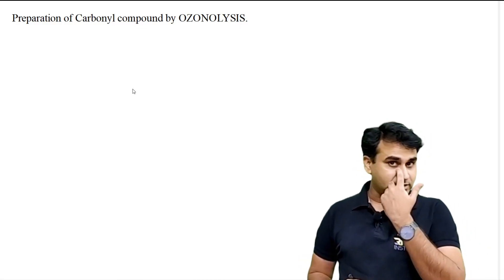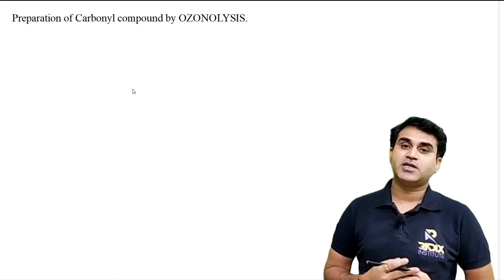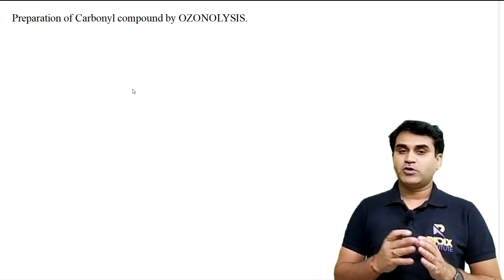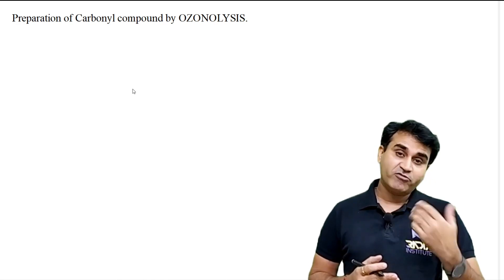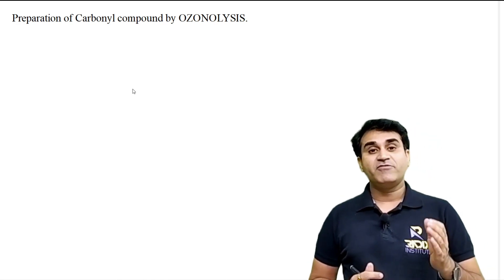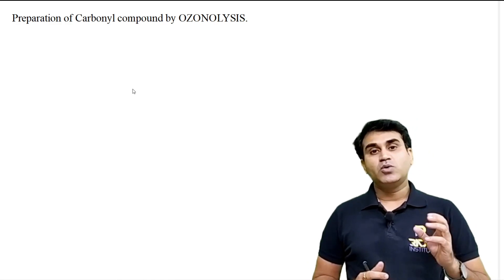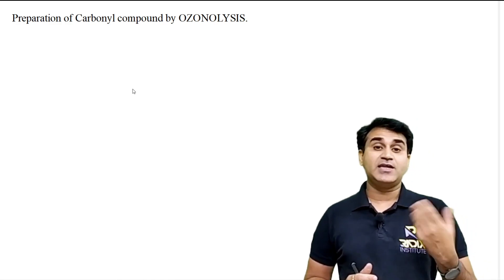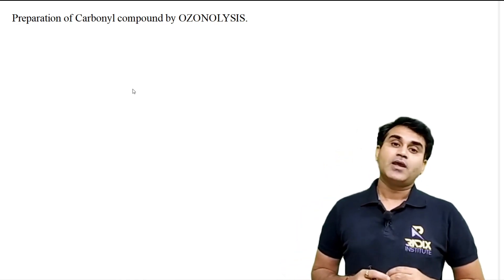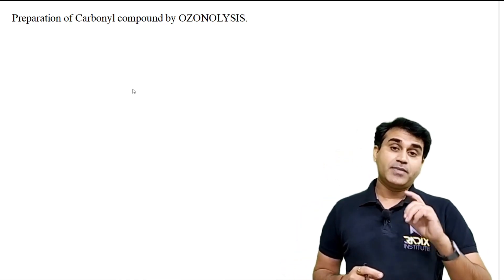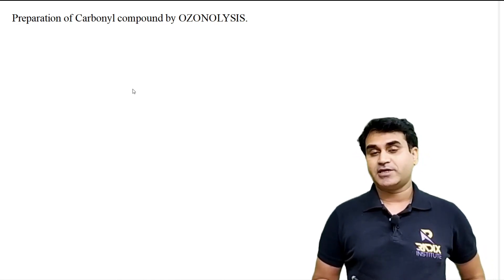By the ozonolysis reaction, for pathway kind of questions, for identifying the number of double bonds, for identifying the position of double bonds, in a way to identify the structure of alkene, this reaction can be very useful. At the same time, for the preparation of carbonyl compounds also, this reaction is important.